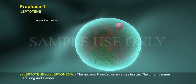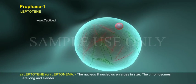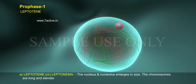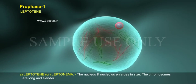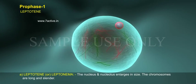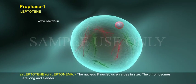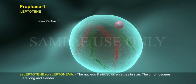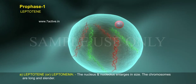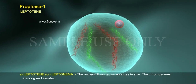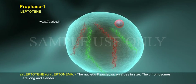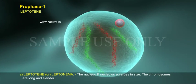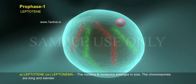A. Leptotene or Leptonema. The nucleus and nucleolus enlarge in size. The chromosomes are long and slender.